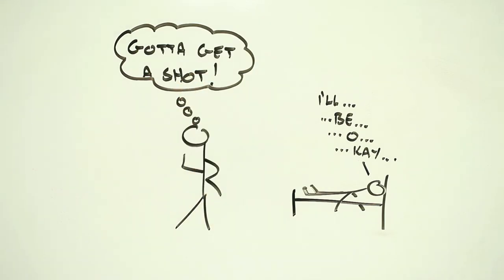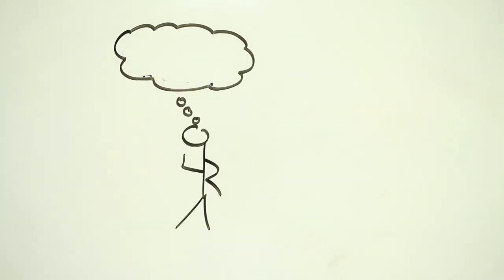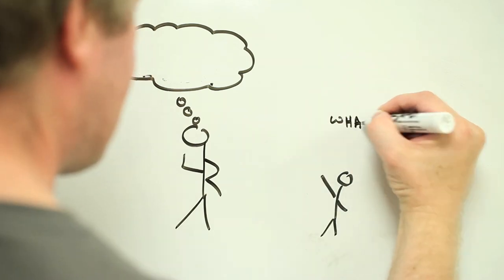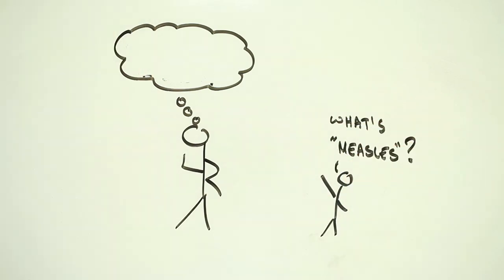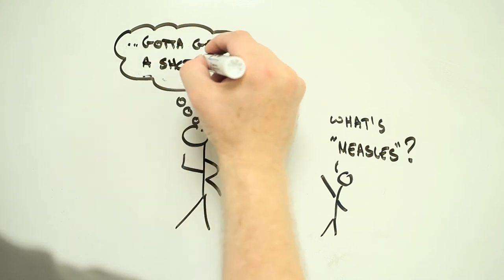Even though back then, vaccines were very new and by today's standards, relatively untested. Today, most parents don't know anyone who has had any of these diseases. Vaccines have been incredibly successful at protecting people's health and saving lives, but as a result, they feel safe and secure.